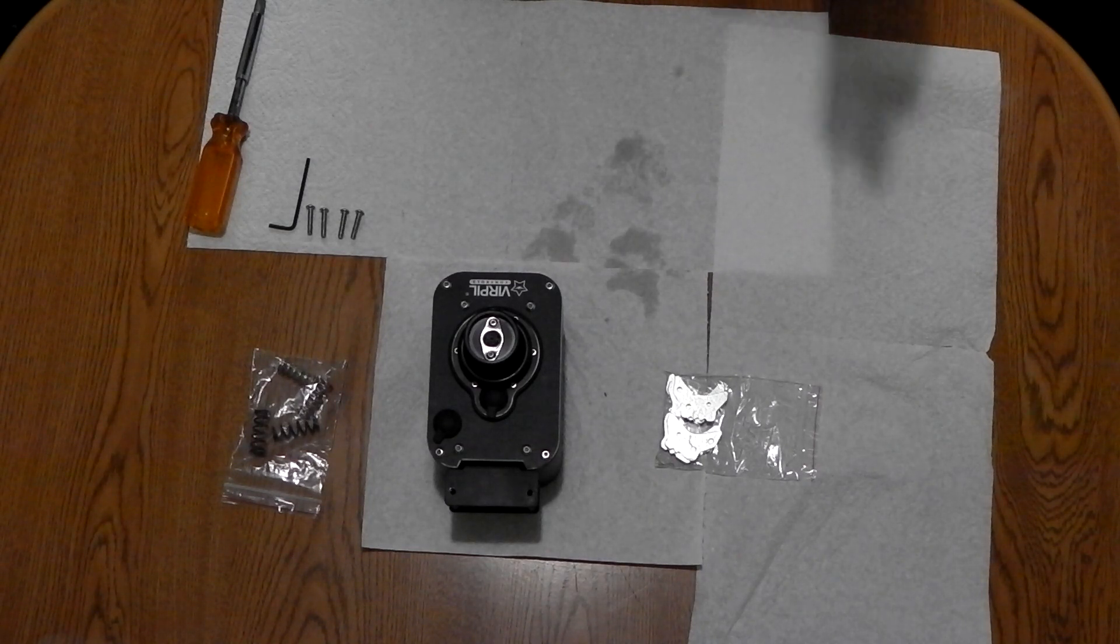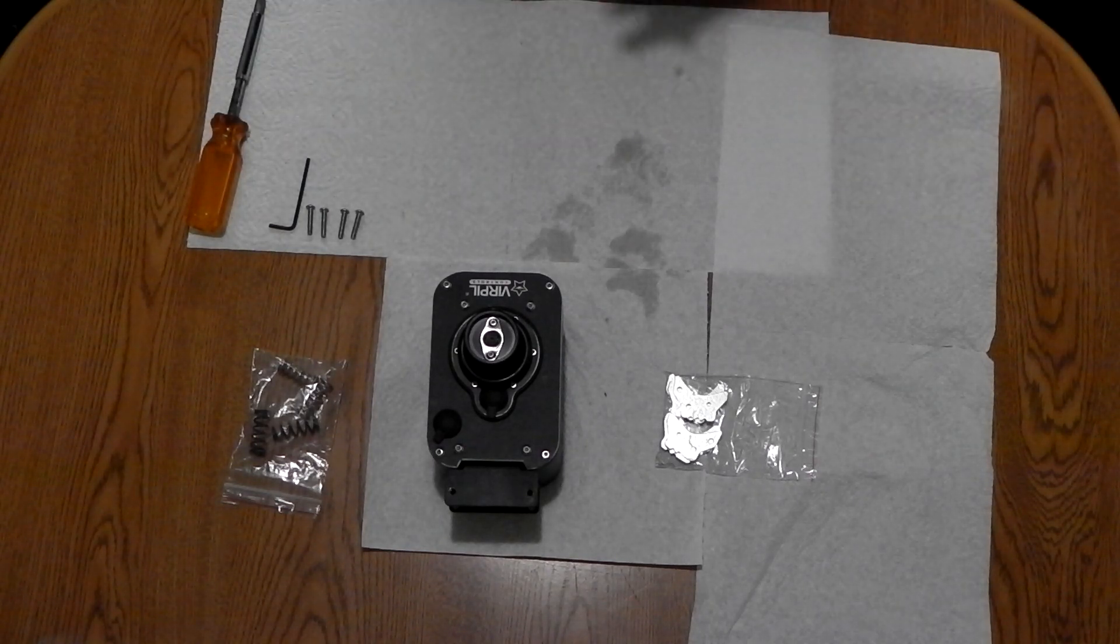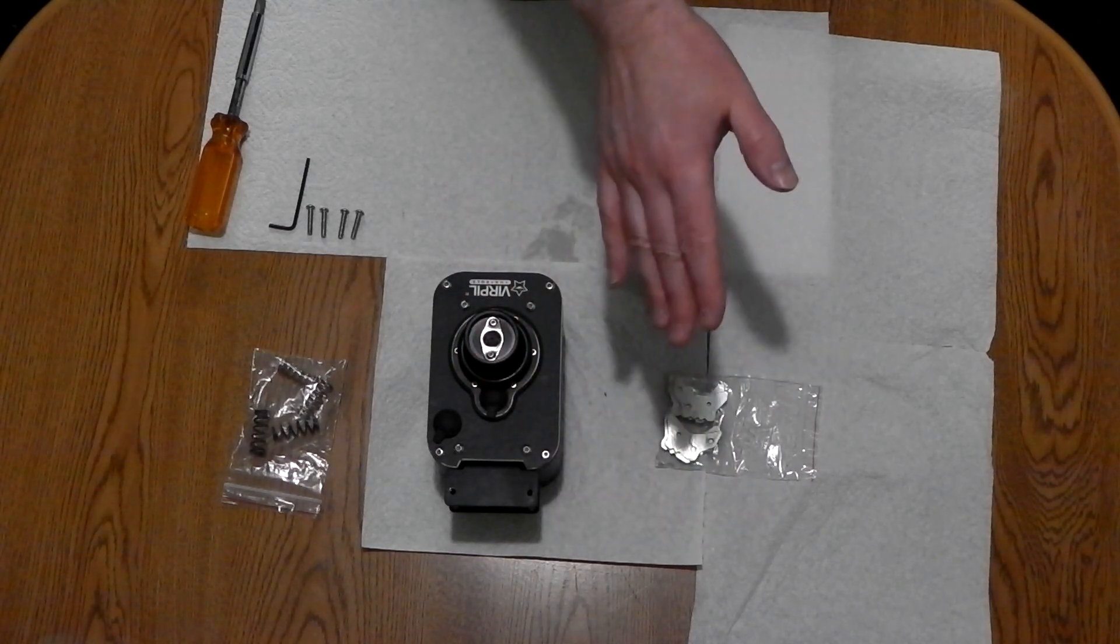The other thing that's adjustable on the CM2 base is the cams. Now there's two basic types of cams for this. There's the aviation ones which have an increasing force whenever you move further away from center. The further you move out, the more force you have to apply.